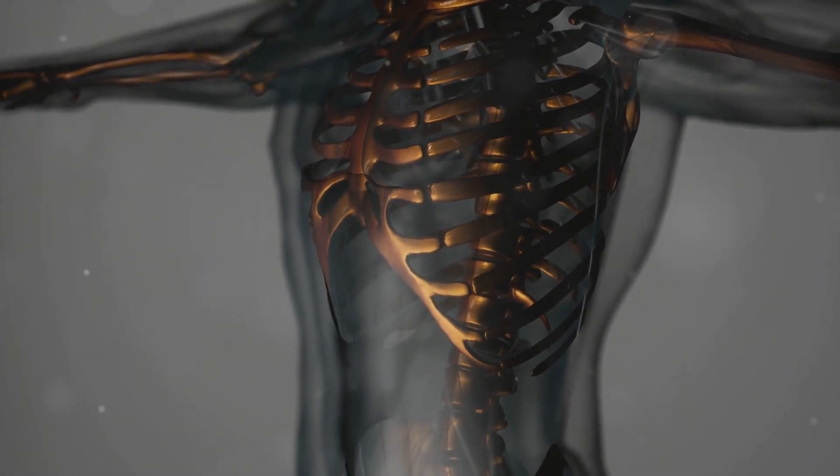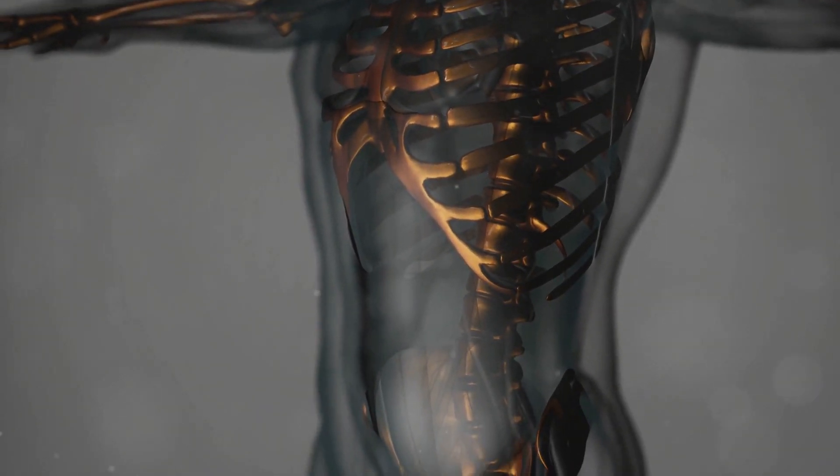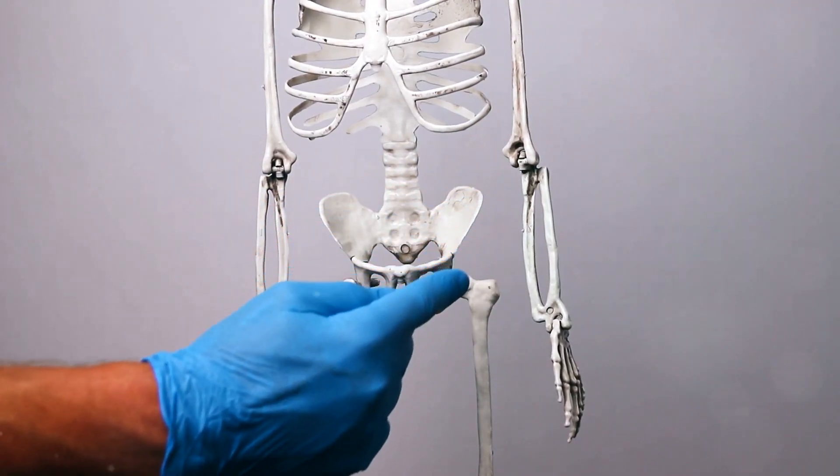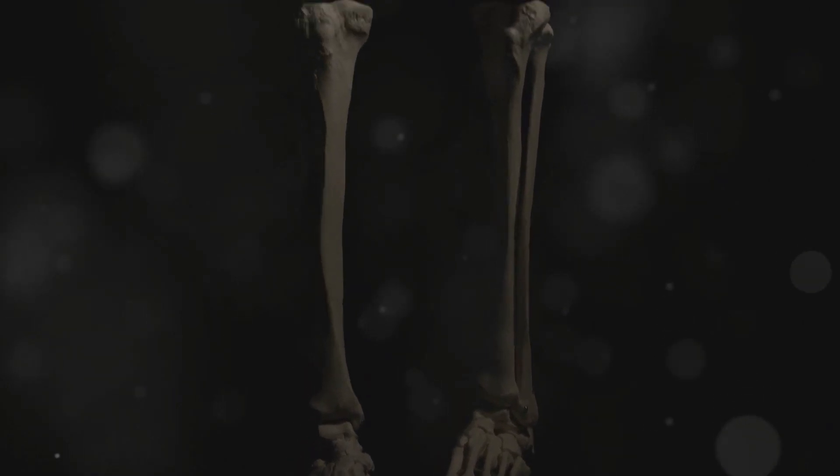Let's start with the foundation of it all. The skeletal system, composed of 206 bones in adulthood. This system not only gives us our shape,